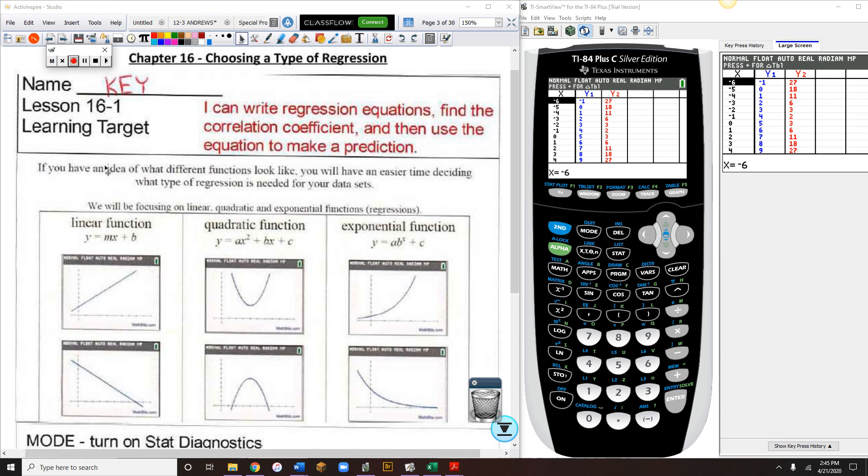So in chapter 16, the overall goal of the first half of the chapter is to look at data and decide, is this linear data, is this quadratic data, is this exponential data? Here's pictures of what those things would look like.